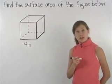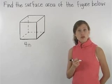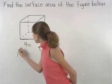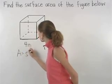To find the area of one face of a cube, we can use the formula for the area of a square, which is area equals side squared.